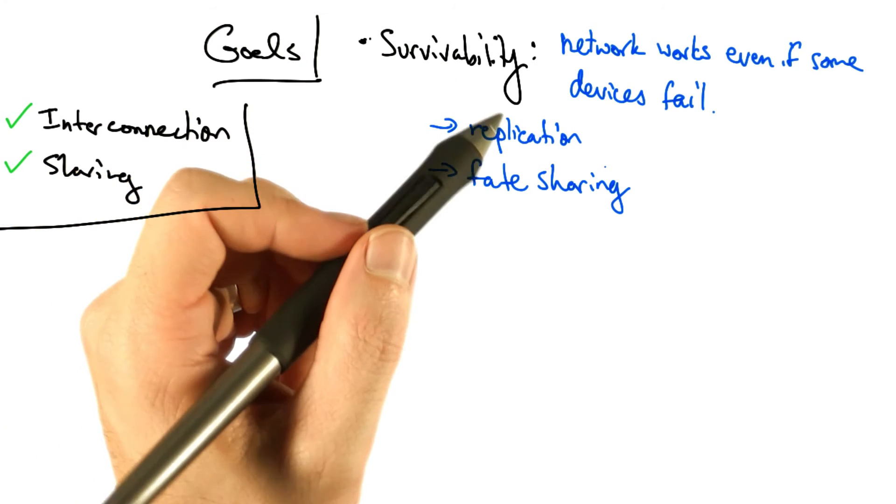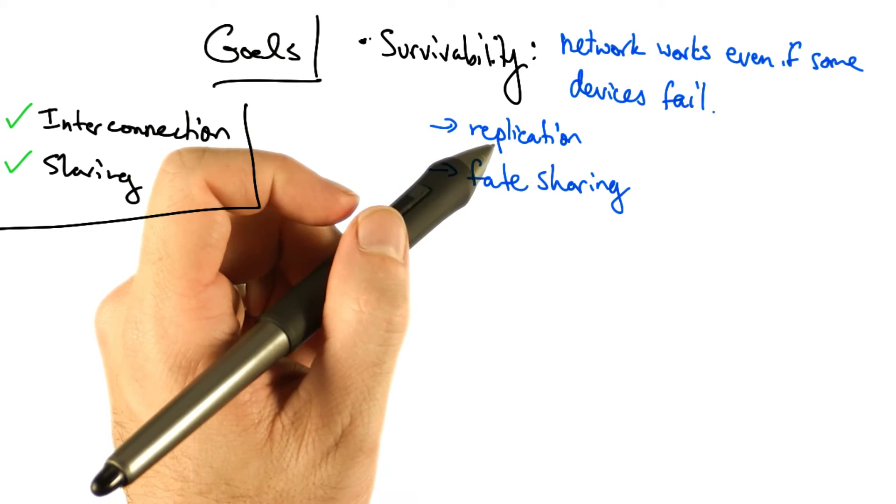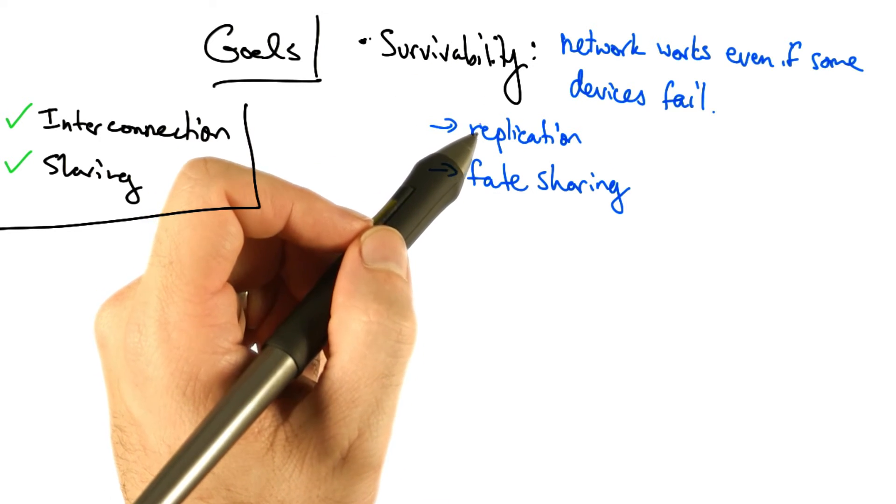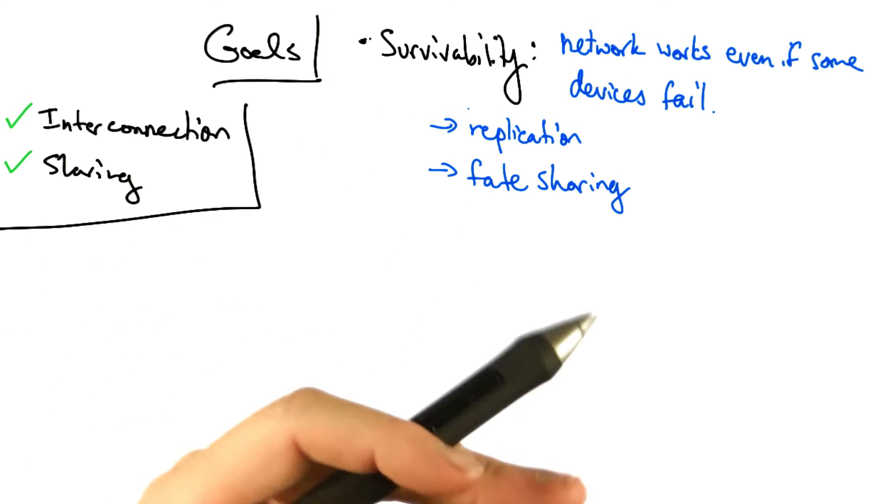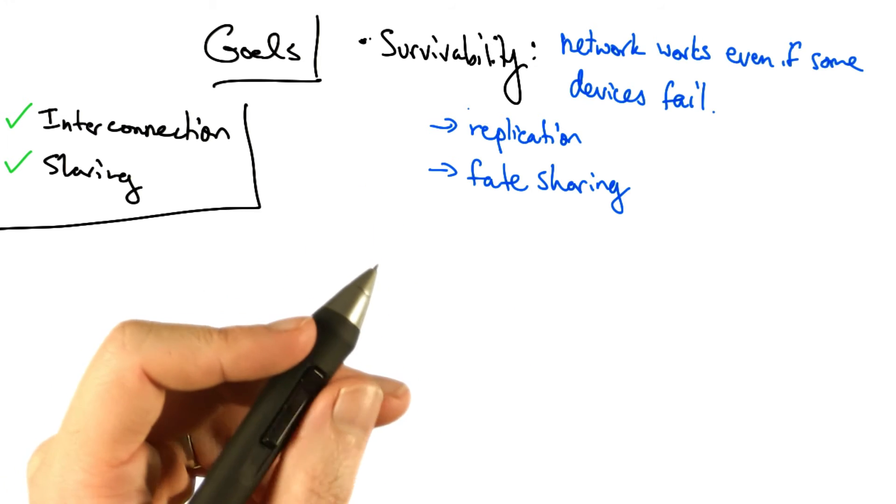There are two ways to achieve survivability. One is to replicate, so one could keep state at multiple places in the network, such that when any node crashes, there's always a replica or a hot standby waiting to take over for the failure.